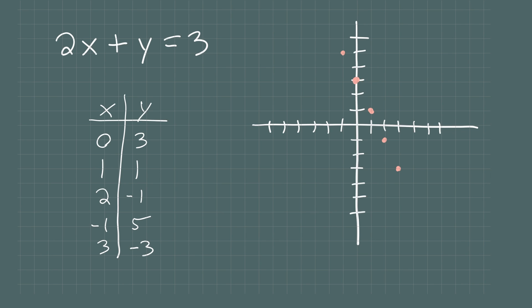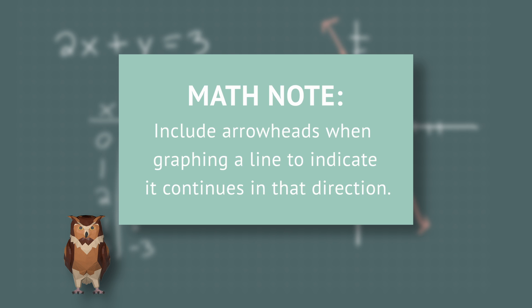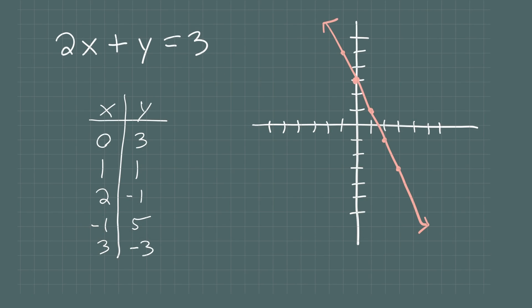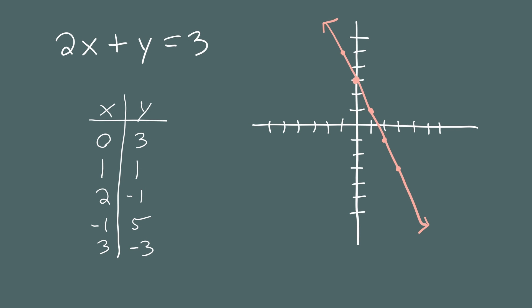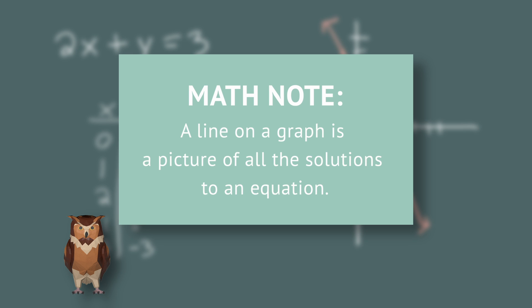Now if you look at these five points, you should see a pattern — they all seem to lie on a line. And that turns out to be the case. Let's draw a line through these five points. If we were to continue making a longer and longer list of solutions, we would get more and more points on this graph, and they would continue to lie on a line. I'll draw arrowheads at the ends to convey that this line continues forever in both directions.